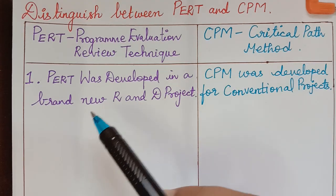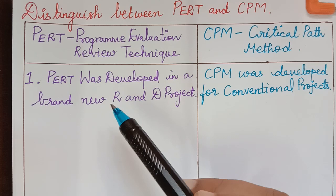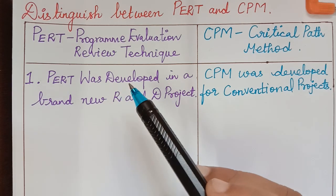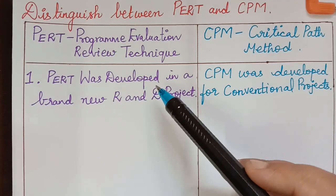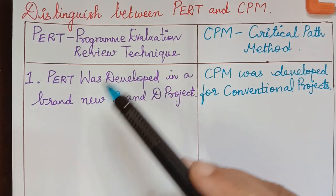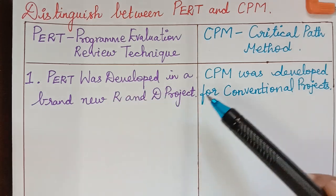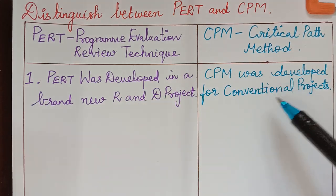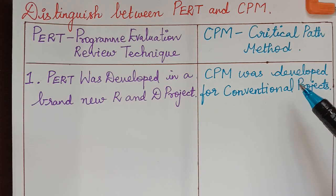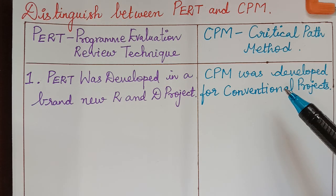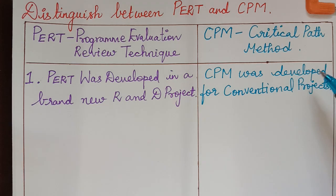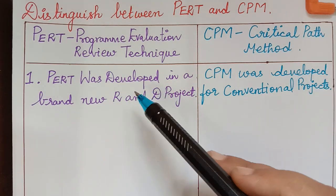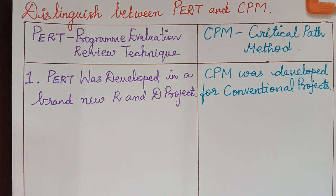PERT has to consider and deal with uncertainties associated with projects. The project duration is regarded as a random variable, and therefore probabilities are calculated to characterize it. Whereas in CPM, we deal only with conventional projects such as construction projects, where resource requirements and duration are certain. So PERT deals with uncertainty and CPM deals with certainty.